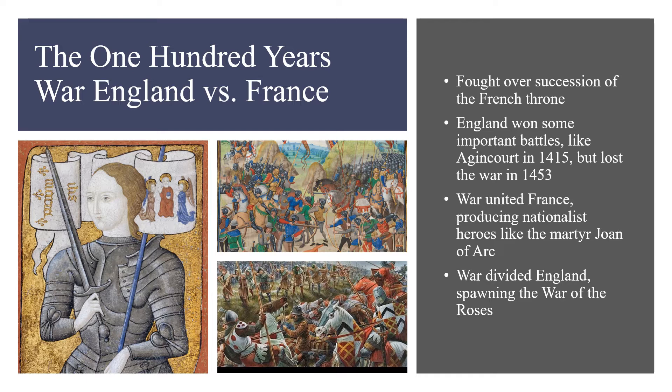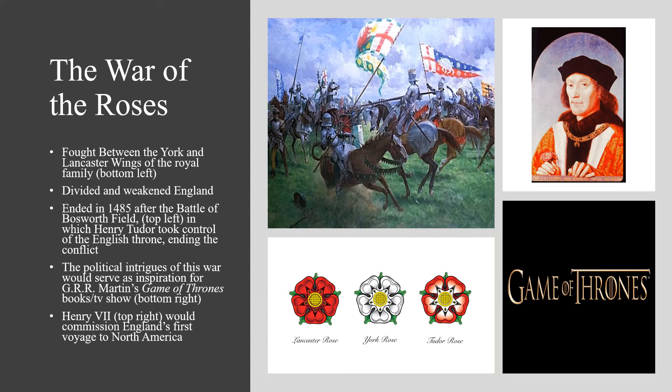The Hundred Years War strengthened French national identity and gave France heroic figures like the martyr Saint Joan of Arc. The English, however, were weakened and divided by the Hundred Years War, as the fighting in France touched off a civil war at home called the War of the Roses. In the War of the Roses, England's royal family, the Plantagenets, were divided between the Red House of Lancaster and the White House of York, as shown by the roses in the slide. This conflict would not completely end until Henry VII of the Tudor family took control of the English throne after the Battle of Bosworth Field in 1485, uniting the houses of Lancaster and York.